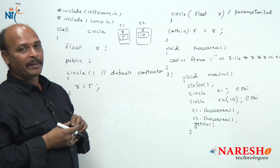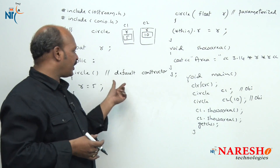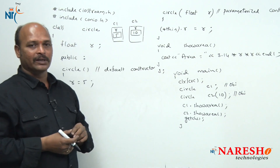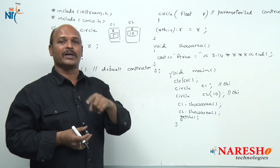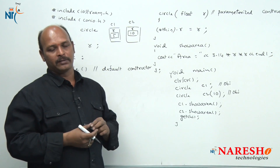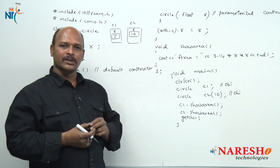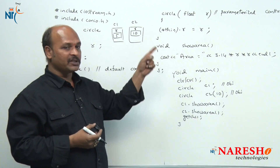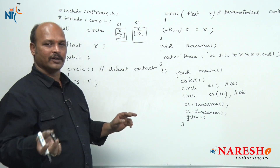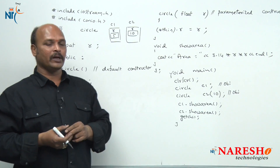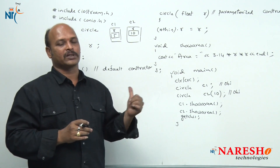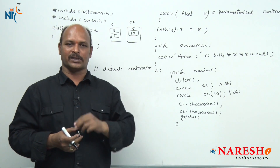In this example we declared two constructors — one default constructor and one parameterized constructor — more than one constructor within the same class. This concept is called constructor overloading: declaring several constructors by changing the number of arguments, argument data types, or order. In the next session I will give another example on constructor overloading — how to call a constructor within another constructor. Thank you.